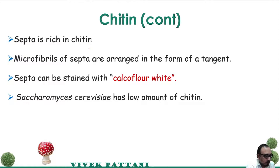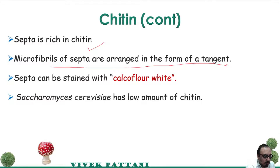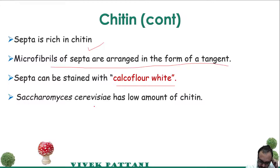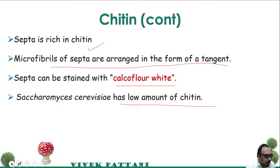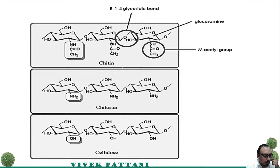Septa are rich in chitin, and the microfibers of the septa are arranged in the form of a tangent. Septa can be stained with calcofluor white. One yeast, Saccharomyces cerevisiae, contains a low amount of chitin. Please have a look at the structure of chitin and cellulose, where you can clearly see the beta-1,4 glycosidic bond linkage.